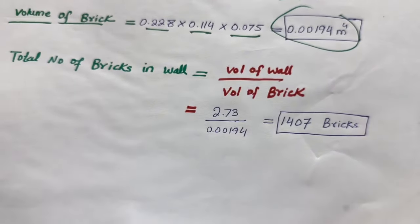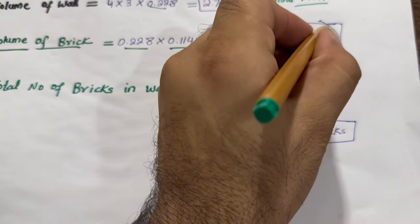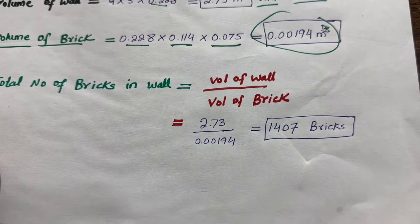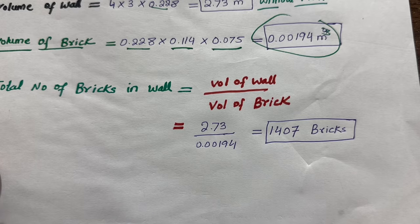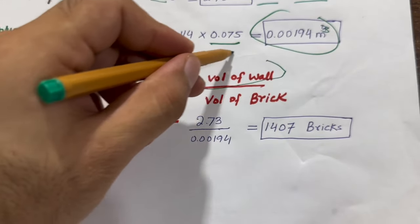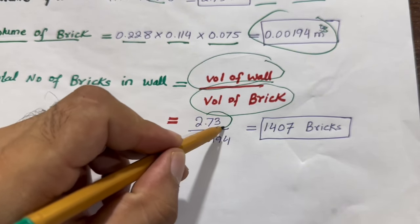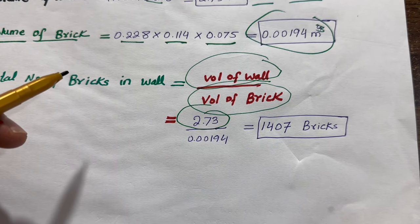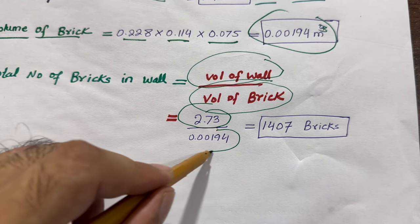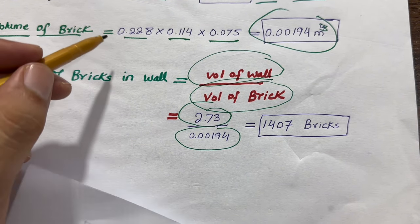To find the total number of bricks in wall, we have the formula: total volume of wall divided by volume of brick. Total volume of wall is 2.73 meter cube divided by the total volume of brick which is 0.00194. We require 1407 bricks to construct this wall without the mortar.